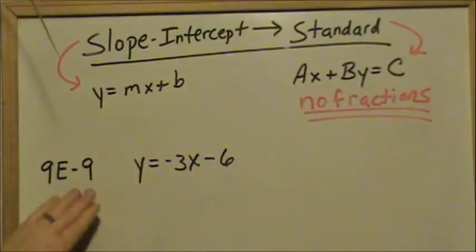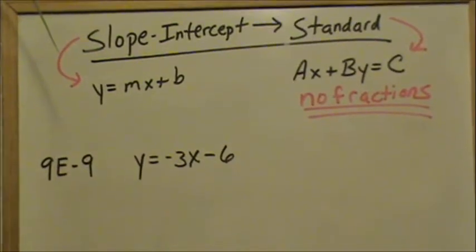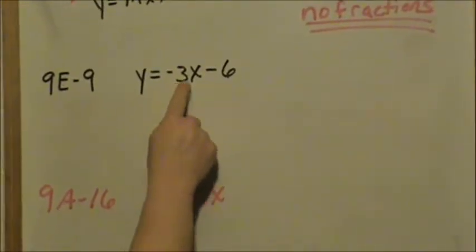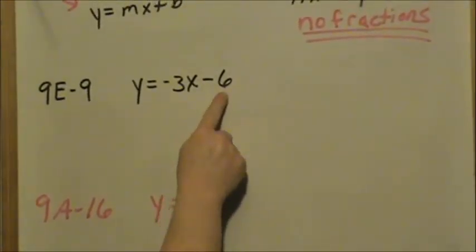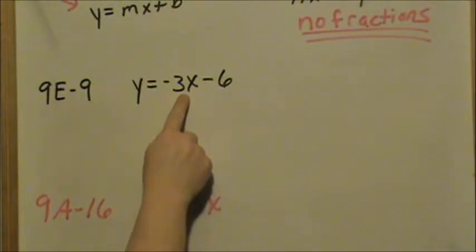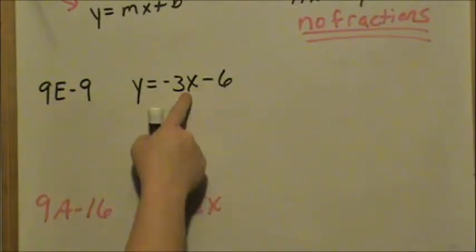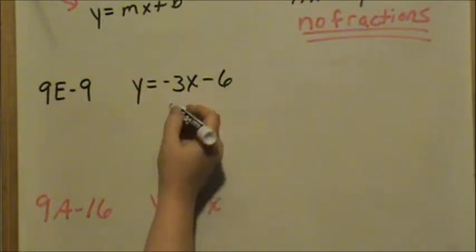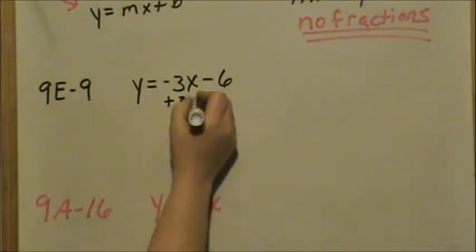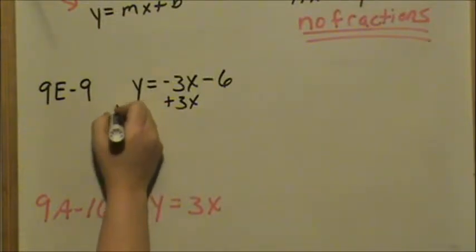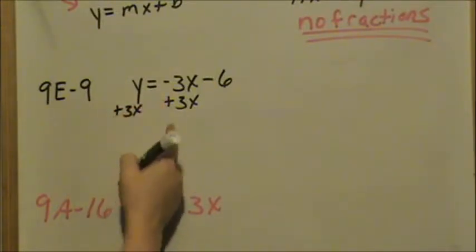Let's look at 9e9. We are in slope-intercept form. We can see the slope is negative 3 and the y-intercept is negative 6, so we want to put it in standard form. Standard form is x's and y's on the same side, whole numbers on the other side. I'm going to get my x on the same side with y. It's subtracting 3x, so to get rid of it I need to add 3x. Whatever I do to one side in algebra, I have to do to the other side — it makes the equation balance.